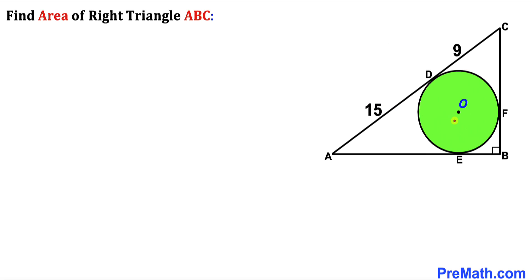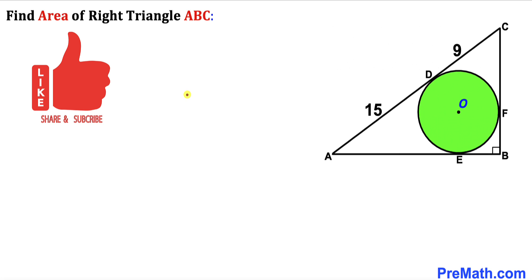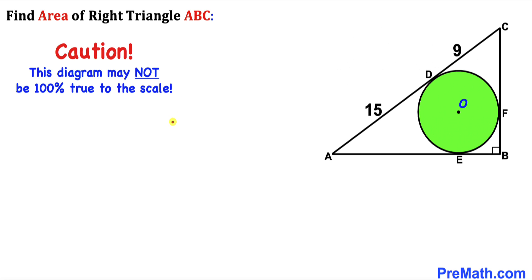Welcome to Pre-Math. In this video we have a green circle inscribed in a right triangle ABC, such that D, E, and F are the points of tangency. Line segment CD is 9 units and line segment AD is 15 units. We are going to calculate the area of this right triangle ABC. Note that this figure may not be 100% true to scale.